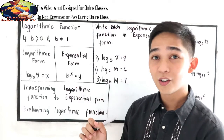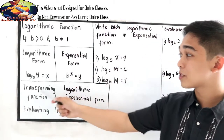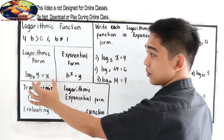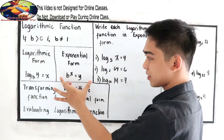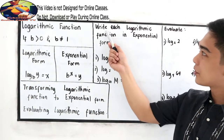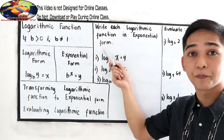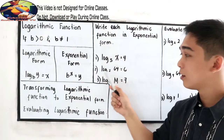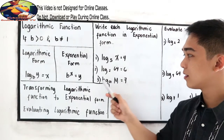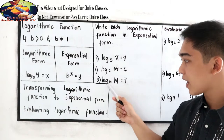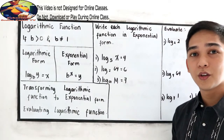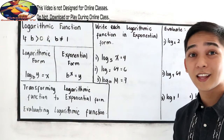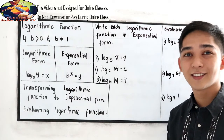Our task is to transform logarithmic functions into exponential form. Write each logarithmic function in exponential form. Number one: log x base 5 is equal to 4. Number two: log 64 base 2 is equal to 6. Number three: log m base a is equal to 7. If you want to try numbers 1, 2, and 3, just pause the video, then resume watching to check your answers.